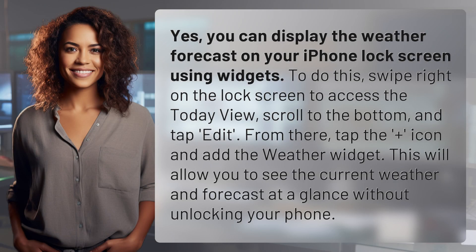Yes, you can display the weather forecast on your iPhone lock screen using widgets. To do this, swipe right on the lock screen to access the Today View, scroll to the bottom, and tap Edit. From there, tap the plus icon and add the weather widget. This will allow you to see the current weather and forecast at a glance without unlocking your phone.